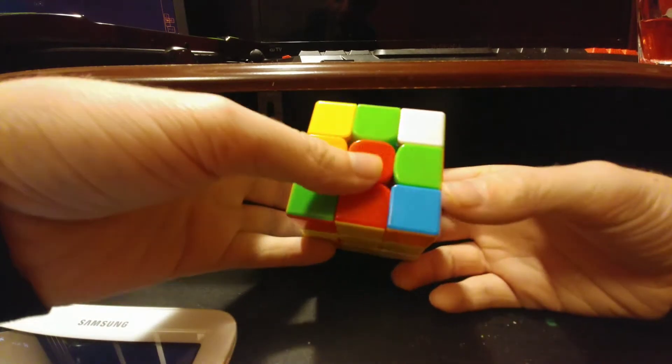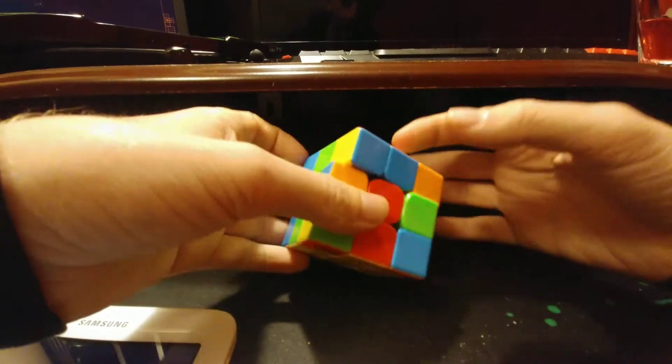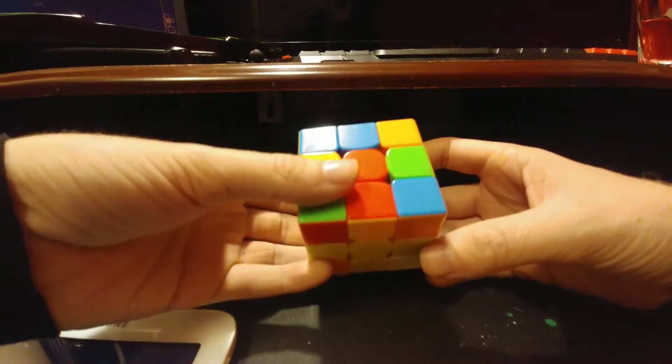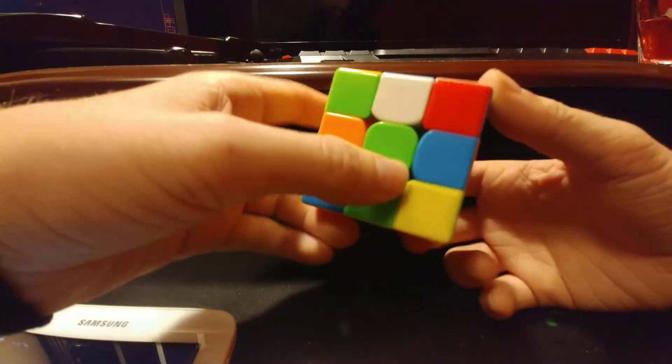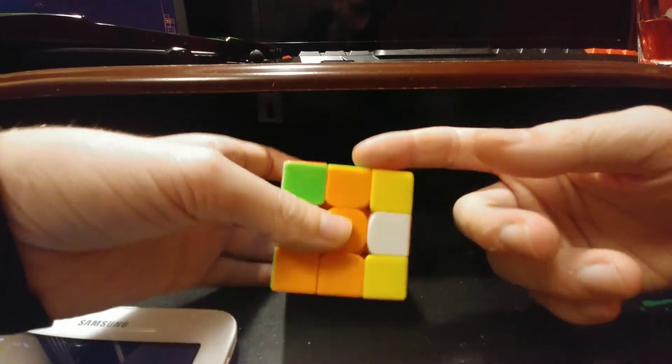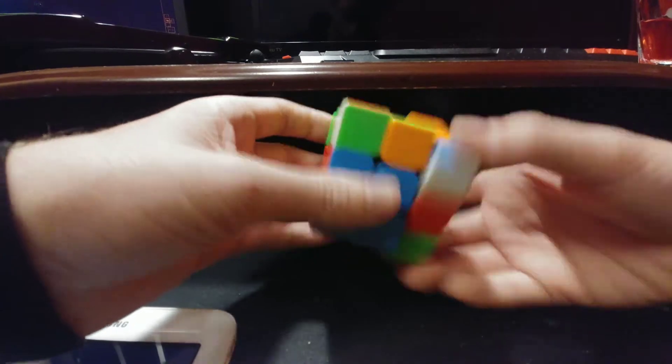Next, F2L. Hey look, the first pair is already done for no reason, why not. Let's go, free pair, didn't have to do anything. Second pair, these two, pretty easy case, just separate them, boom you're done. That's the second pair done.